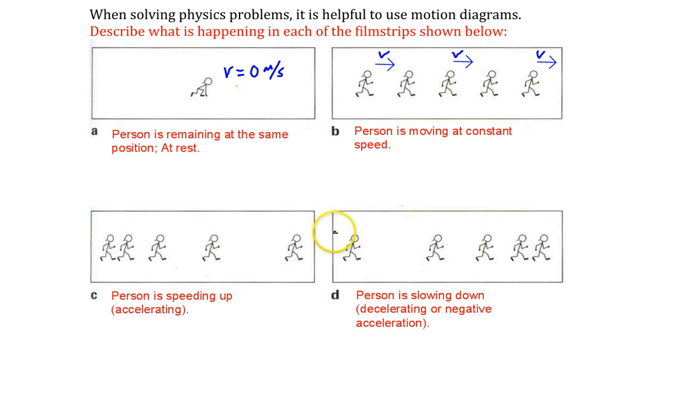And to show that the person's speeding up, I'll show that the arrows are getting larger, so that the initial velocity at, say, time 0 is smaller than the final velocity at some other point in time.